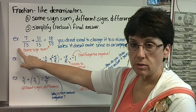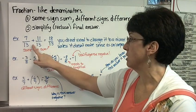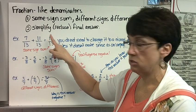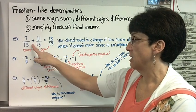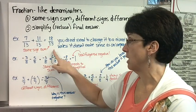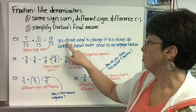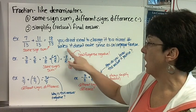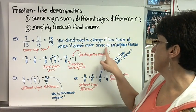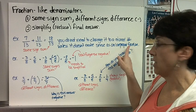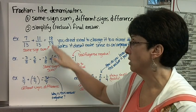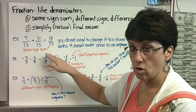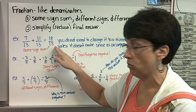So here I have an example: 7 thirteenths plus 11 thirteenths. You just add your numerators. You get 18 thirteenths. Same sign, they're both positive, same sign sum. This is important: you do not need to change it to a mixed number unless it doesn't make sense as an improper fraction. You can totally just leave it 18 thirteenths. You don't need to say 1 and 5 thirteenths.